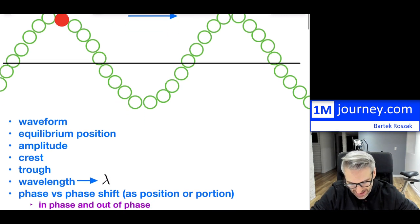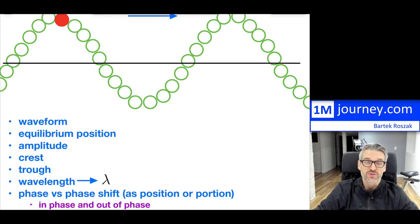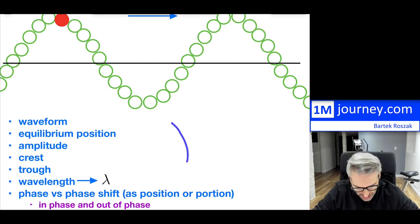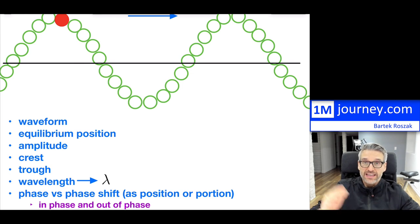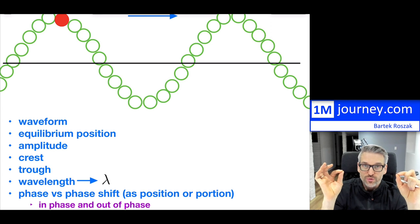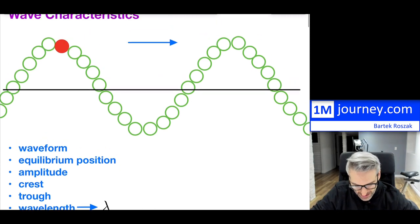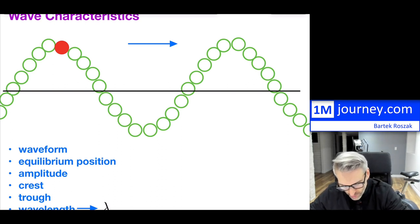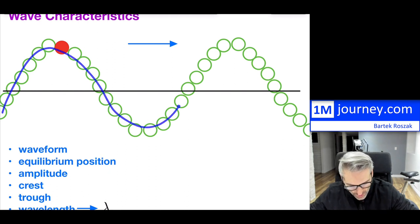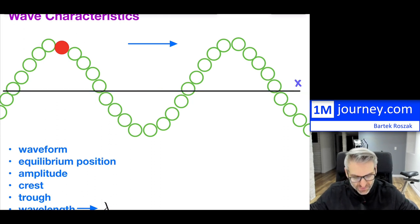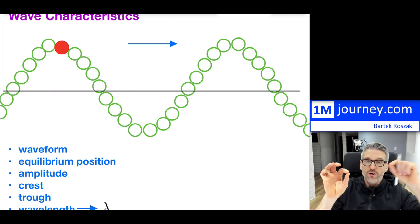A very interesting designation is something called a wavelength, which is going to be extremely important as you study waves. We designate it with lambda — a Greek letter. That particular lambda is the length or distance between two points on the wave that are at identical positions with respect to the equilibrium, from one point to another. This axis — the equilibrium point — if the wave is propagating and moving forward, this is like your x, your position. Where you are in the wave is a position.